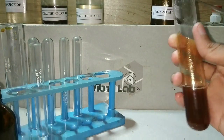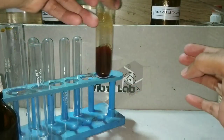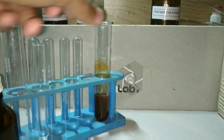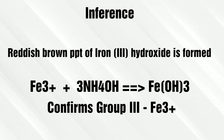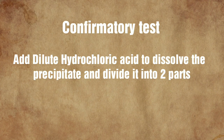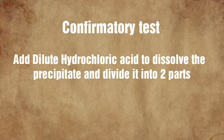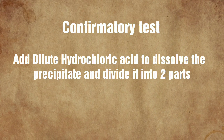All the ammonia has reacted with the salt. The reddish brown precipitate is iron 3 hydroxide. Any precipitate formed on adding ammonium hydroxide confirms the presence of group 3. The reddish brown color points towards ferric ions. Now we will dissolve this precipitate in dilute hydrochloric acid and divide the solution into two parts.